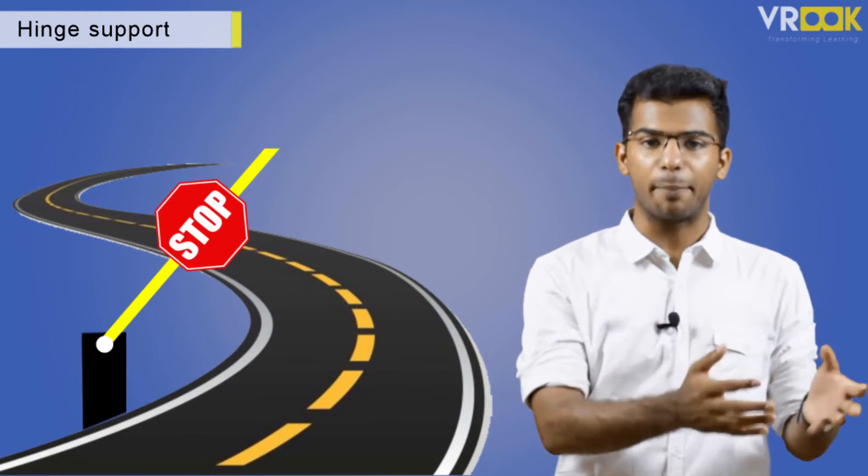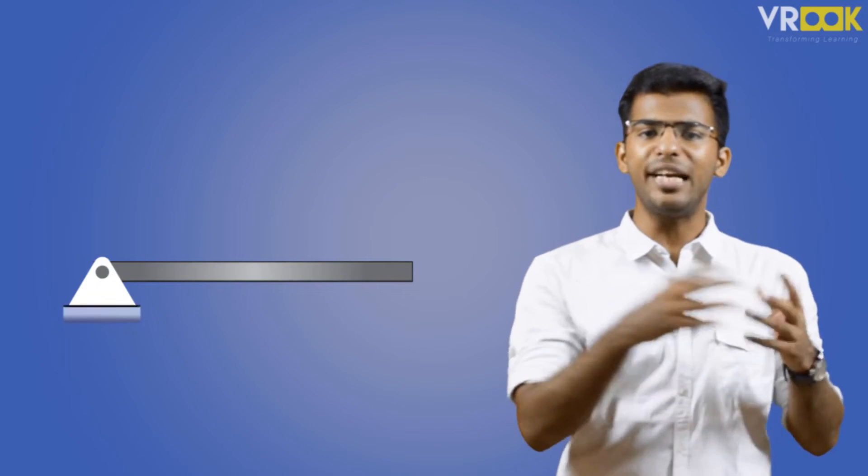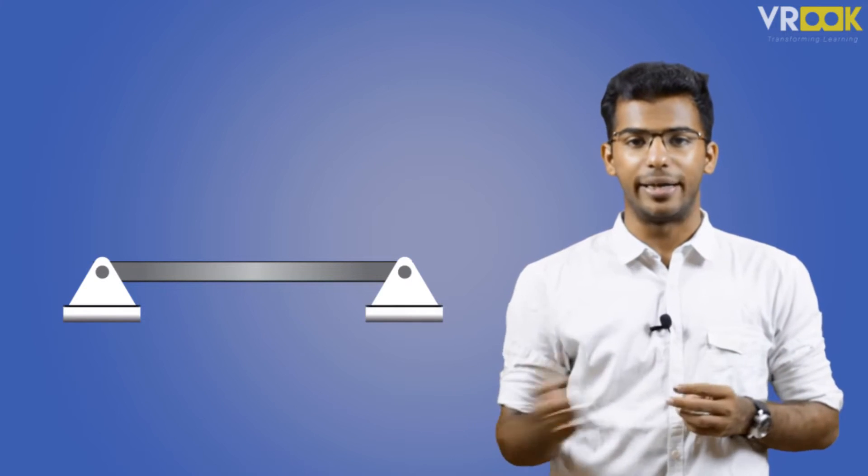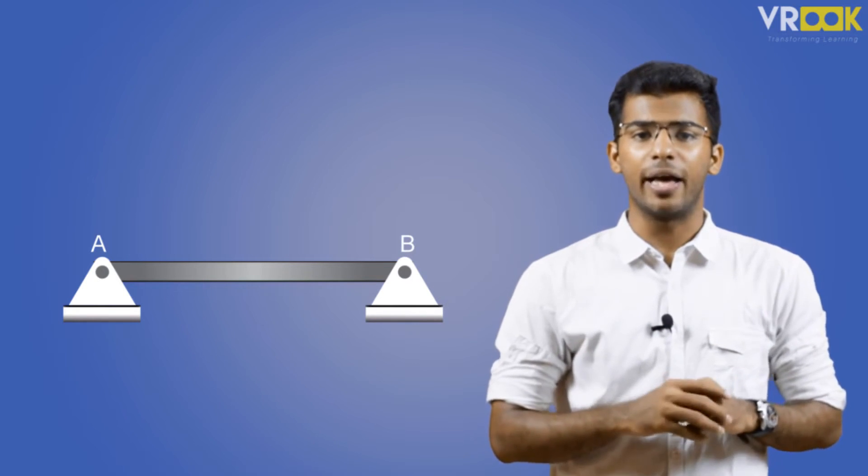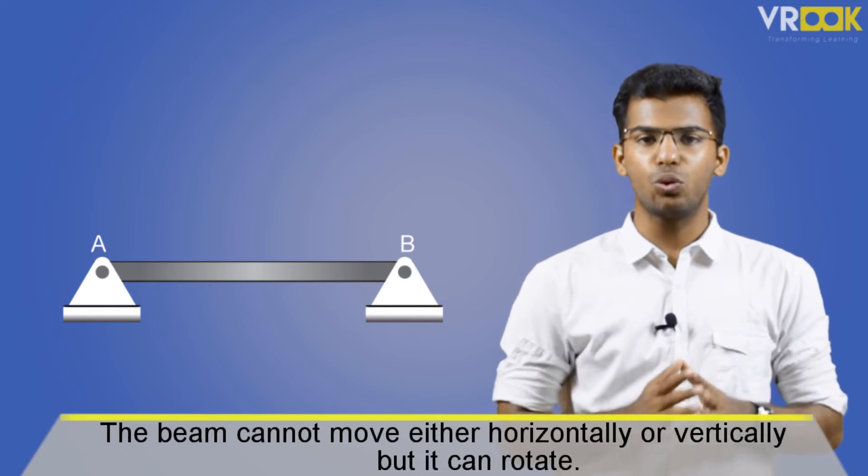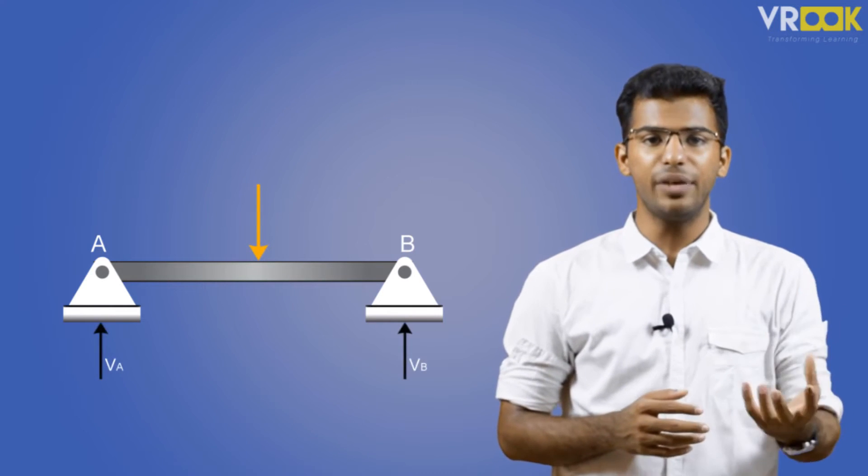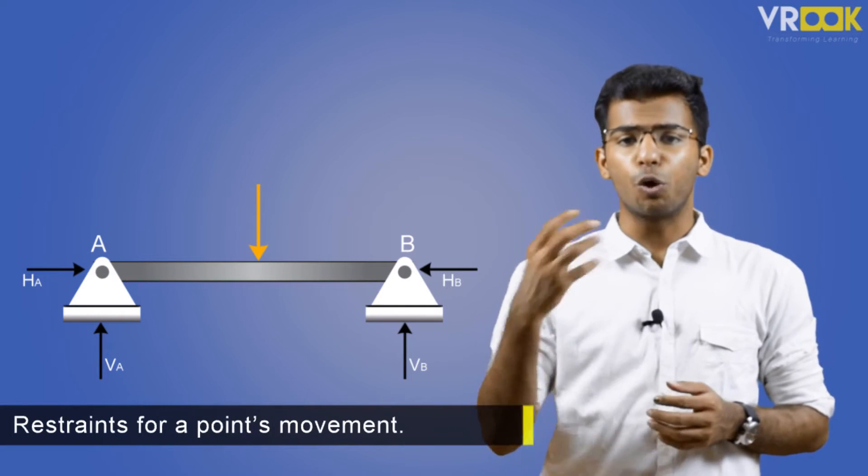Then the second type is a hinge support. The best example we can take for a hinge support is a level crossing gate or a check post gate where it opens and closes with a hinge support, or another example is a door. So the check post gate is free to rotate about the hinge as we can see, but it cannot move up and down or left or right. It is fixed in that position. So this is called a hinge support where the beam cannot move either horizontally or vertically, but it can rotate. Hinge always has two reaction forces: one vertical which is Va and one horizontal which is Ha. But what are these reaction forces? They are the restraints for movement of a point.